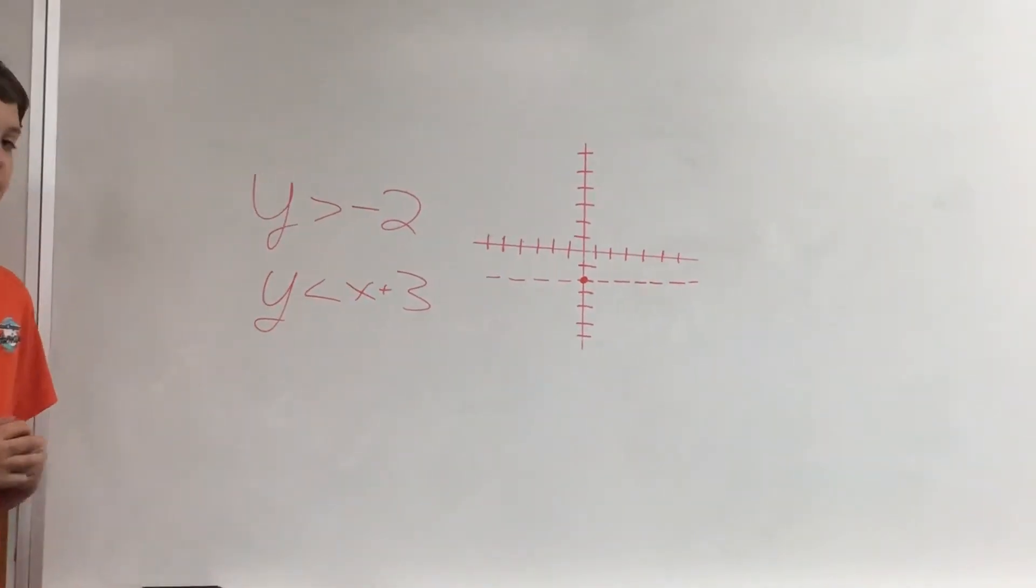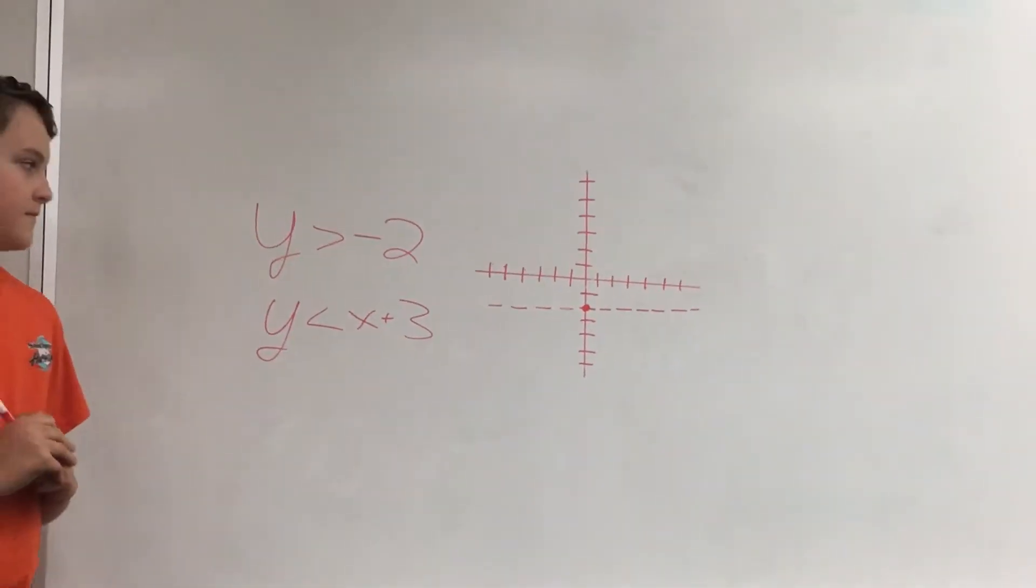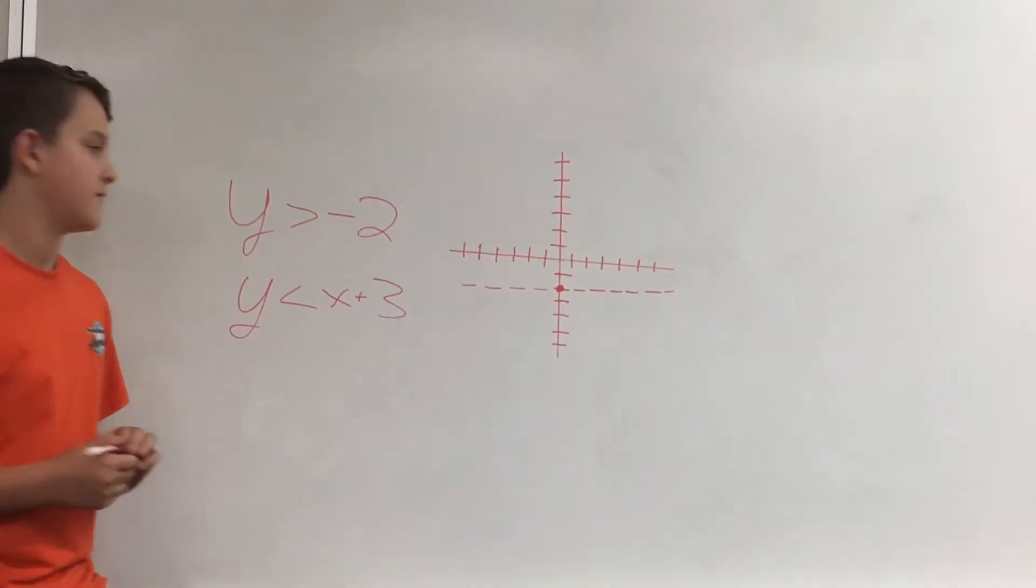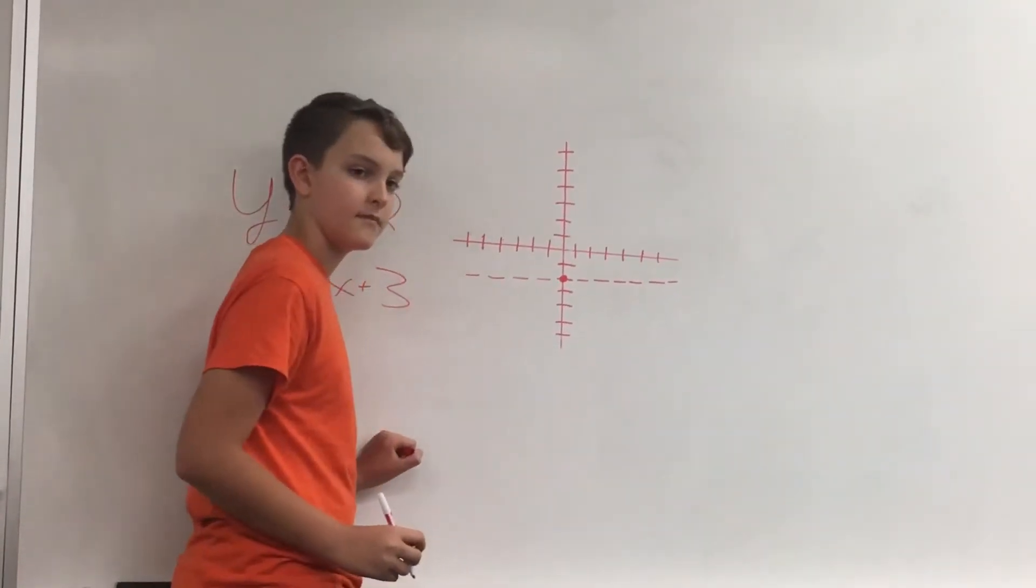Finally, you figure out which way to shade. It is easiest if you use 0, 0. So 0 is less than negative 2. It is, so put the arrows facing up.